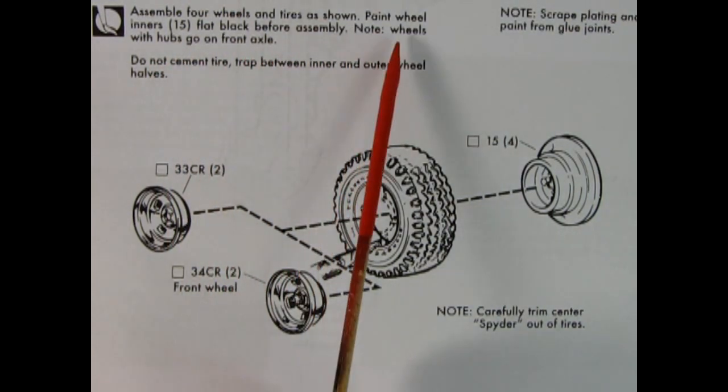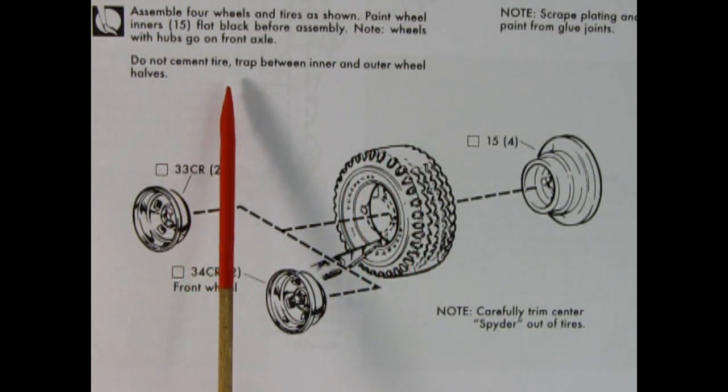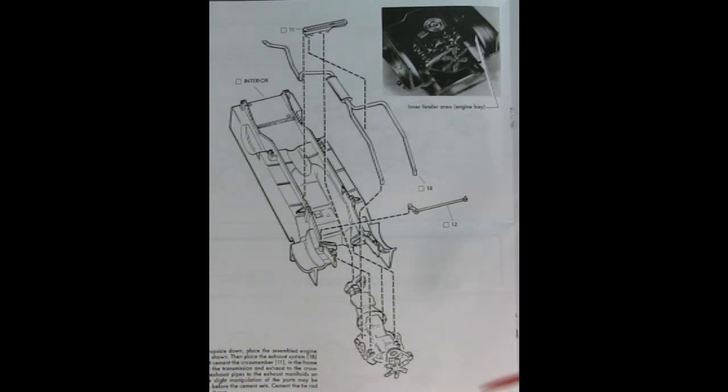Step two shows our wheels and tires being assembled. It says assemble four wheels and tires as shown. Paint wheel inners flat black before assembly. Note wheels with hubs go on front axle. Do not cement tire trap between inner and outer wheel halves and scrape plating. We also have to cut out the spider from the center of the tires. Here we have our wheels. These are the front ones down here and these are the back. You can see the hub right there so those will go in the front.